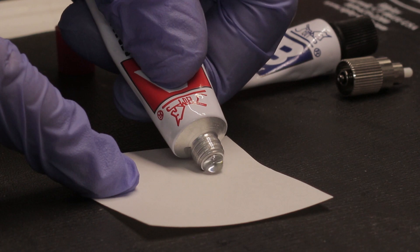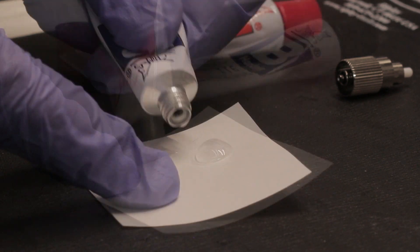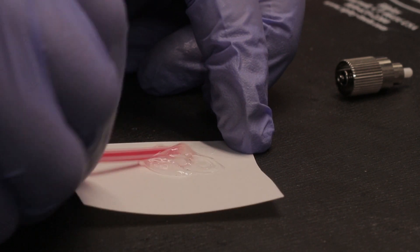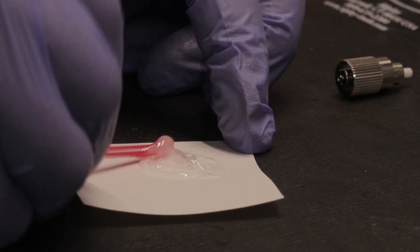Next, grab the resin and hardener and mix them to a 50-50 ratio. After mixing the resin and hardener, you have about 5-10 minutes to use it.